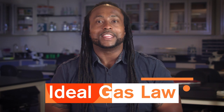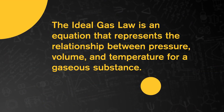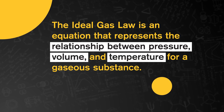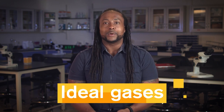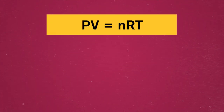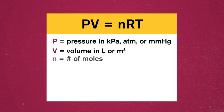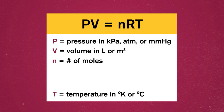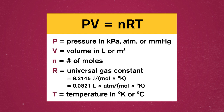Sometimes we'll be solving mole problems that deal with substances in their gaseous form. To do that, we need to understand another important equation: the ideal gas law. The ideal gas law is an equation that represents the relationship between pressure, volume, and temperature for a gaseous substance. Real-world chemistry is hardly ever ideal, but this law represents gases without taking their complicating factors into account. Ideal gases are easier to work with since we've simplified the math involved. The law is written as PV equals nRT — pressure times volume equals the number of moles of a substance multiplied by the temperature and R, the universal gas constant.